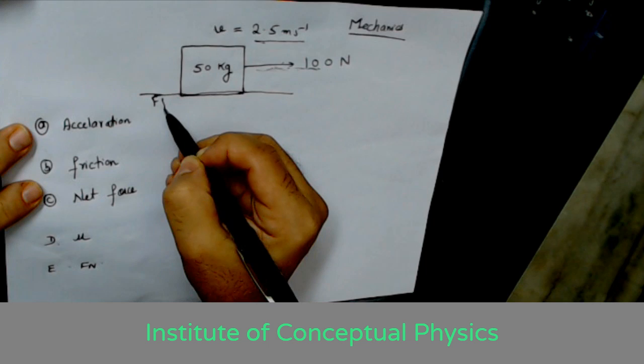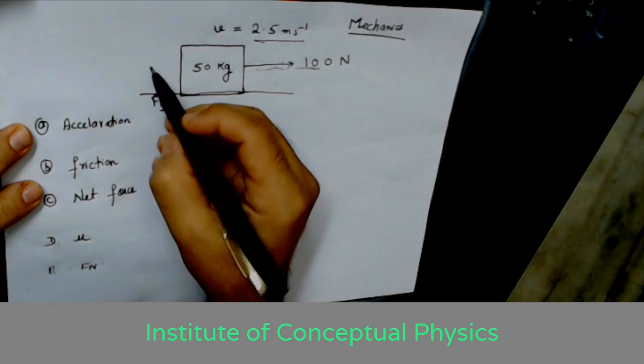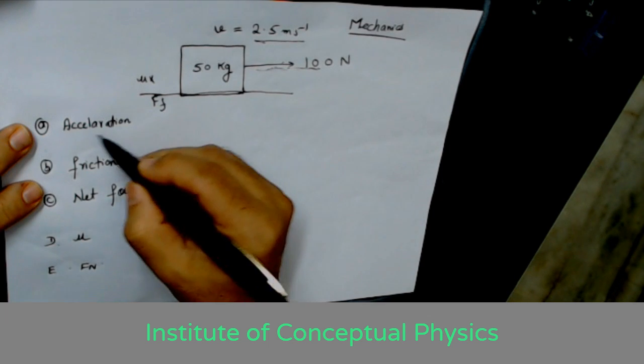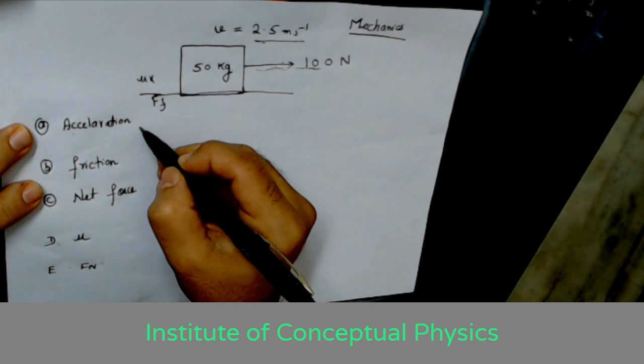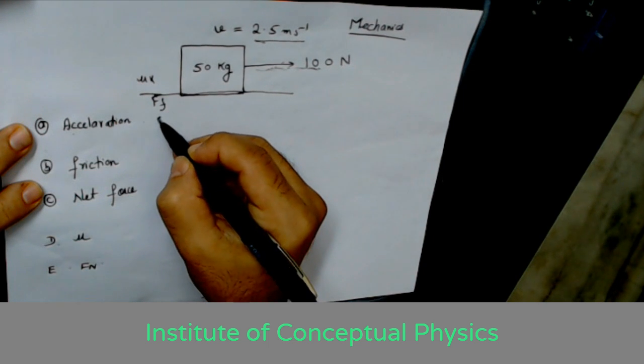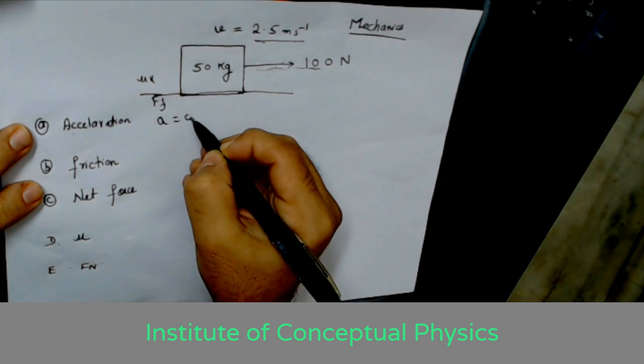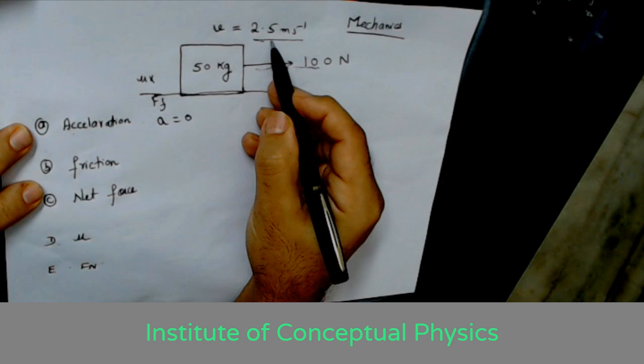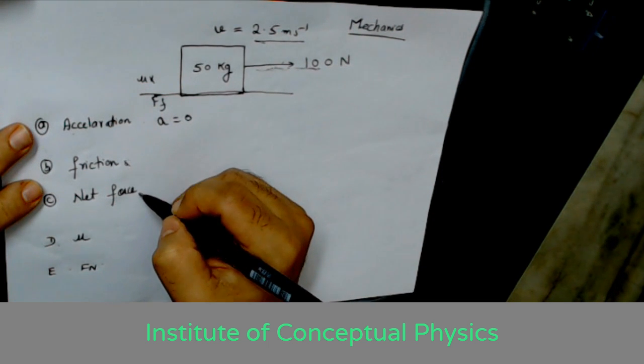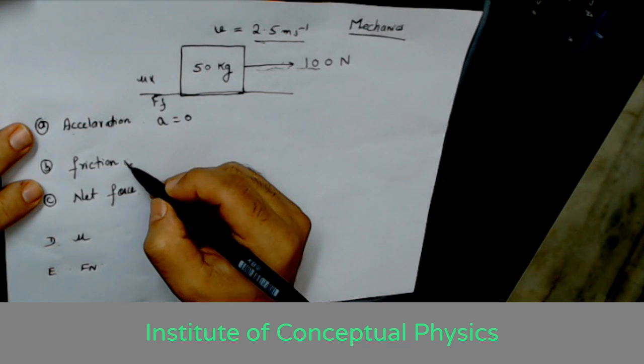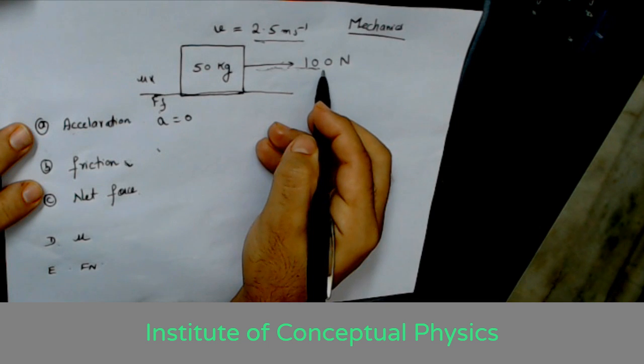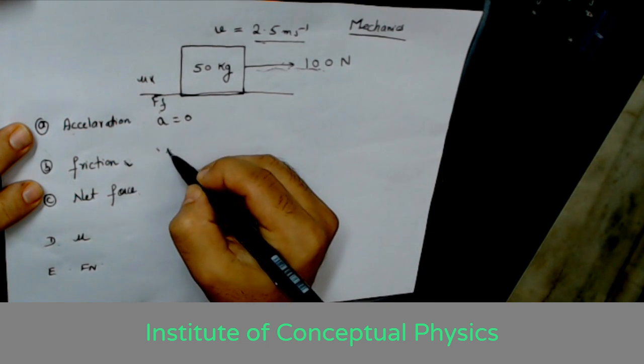Since the body is moving, it has to be the kinetic friction which is working. So if you look into the problem, number one: the acceleration is zero because the body is moving with constant velocity. The frictional force must be equal and opposite to this force, so the force of friction is 100 newtons.